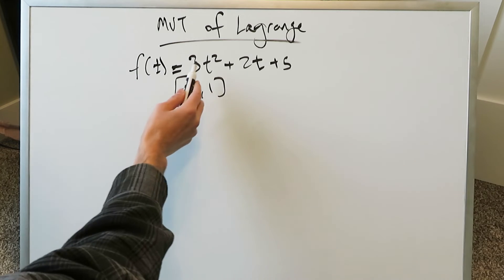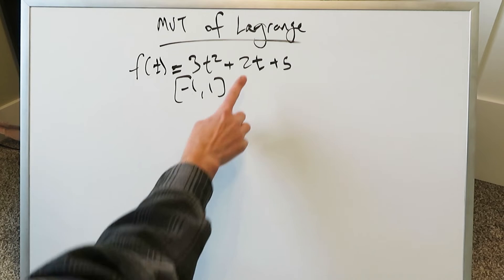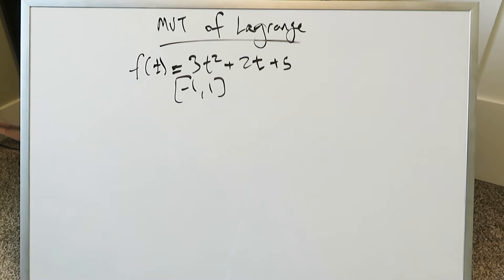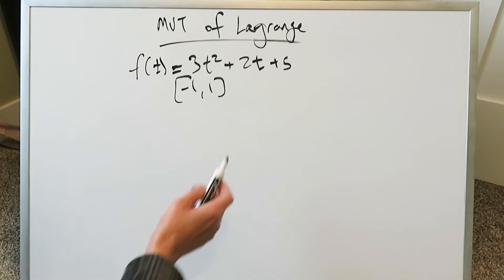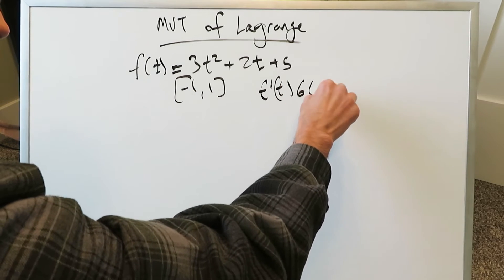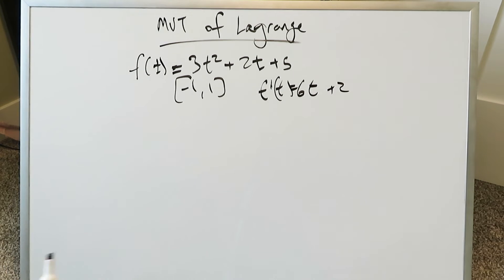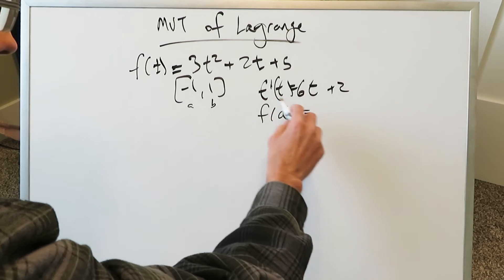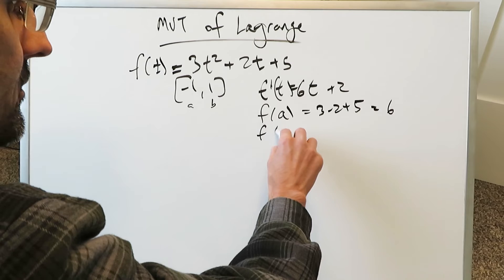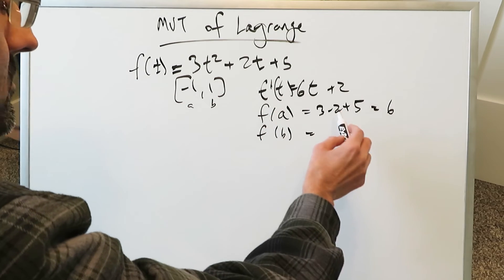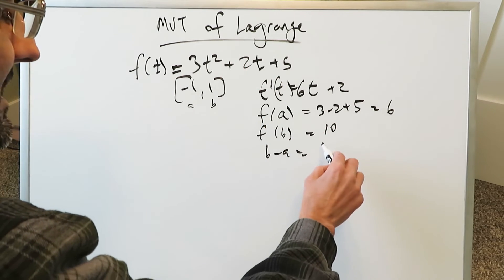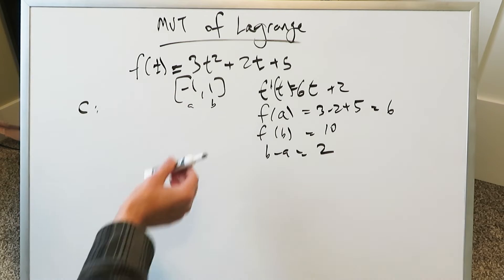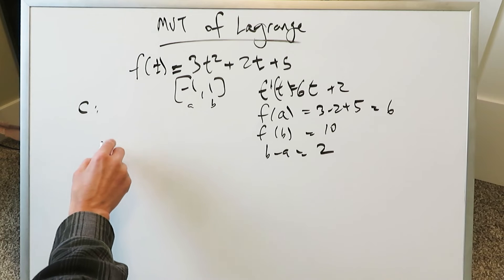Let's do the same exercise with f(t) = 3t² + 2t + 5 — a good polynomial function with domain (-∞, ∞). It is continuous and differentiable over the closed and open interval. The derivative is 6t + 2. Computing f(a) with a = -1: 3(1) - 2 + 5 = 6. Computing f(b) with b = 1: 3 + 2 + 5 = 10. Then b - a = 1 - (-1) = 2. Now we're looking for a certain c such that the tangent line slope equals the slope of this secant line. It should exist, but we'll find out.